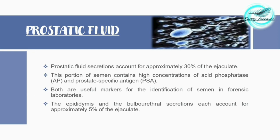The prostatic fluid secretions account for approximately 30% of the ejaculate, so this is a major portion. This portion of semen contains a high concentration of acid phosphatase and prostate specific antigen — two enzymes which act as useful markers for the identification of semen in forensic laboratories.